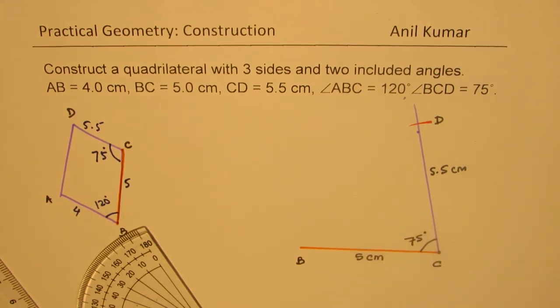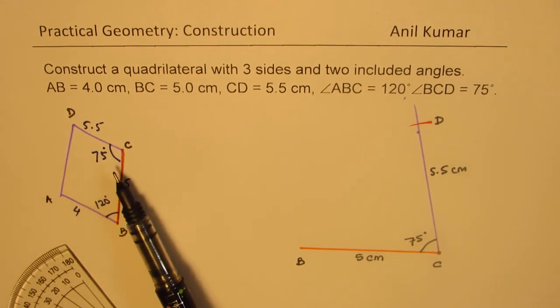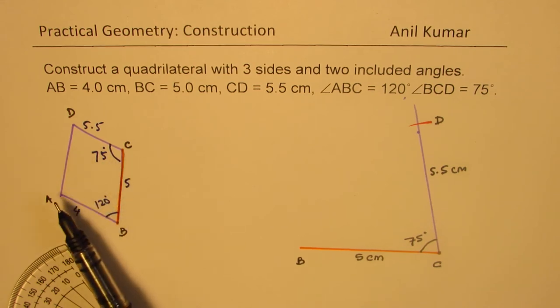So we got one of our angles. Now we need point A. We already have three points. A can be obtained from 120 degrees on this side and 4 units.